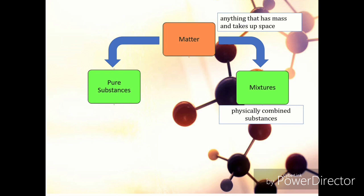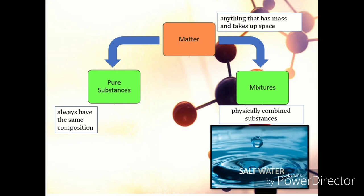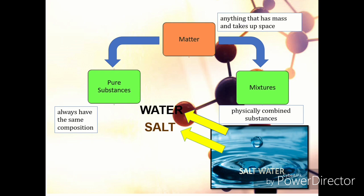Pure substances are substances that will always have the same composition. An example of a mixture is salt water. It is a mixture because the salt and water are physically combined together. However, looking at the salt and water separately, they are classified as pure substances. That is because we can never physically combine any substance in order to create water and salt — they were water and salt even before you and I existed.